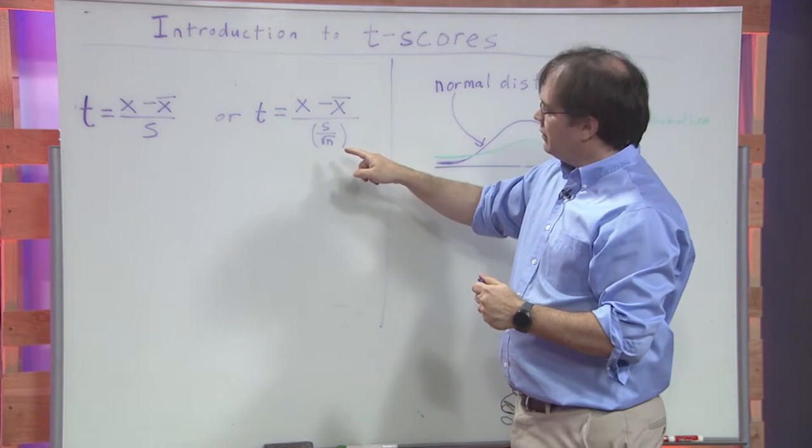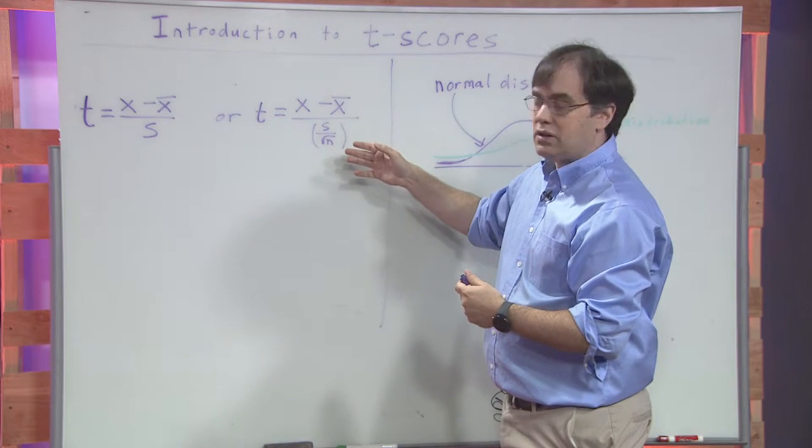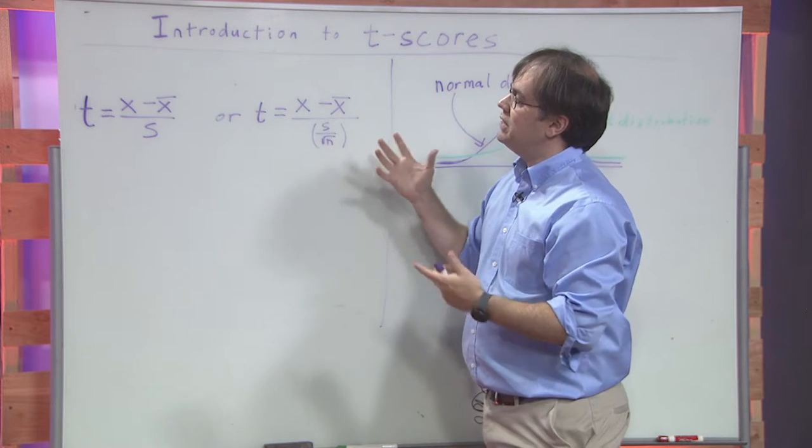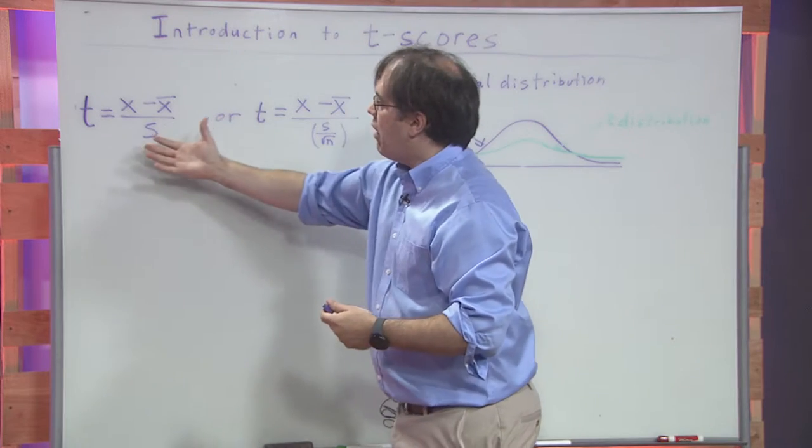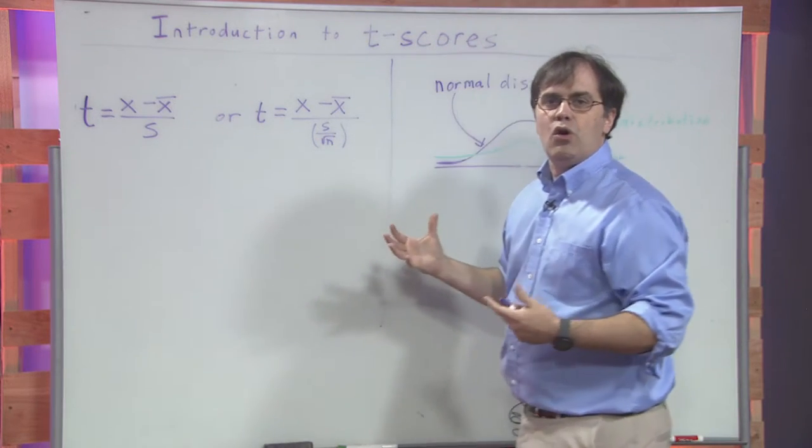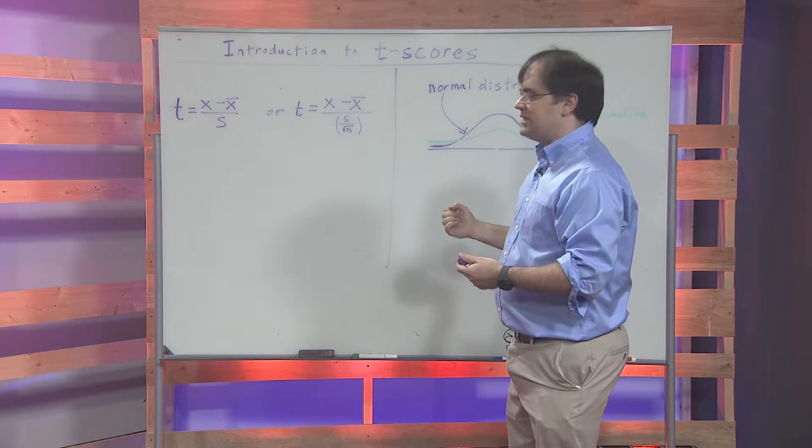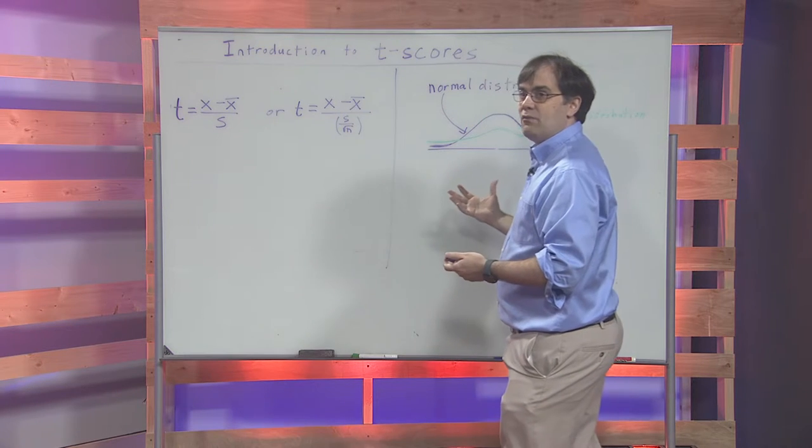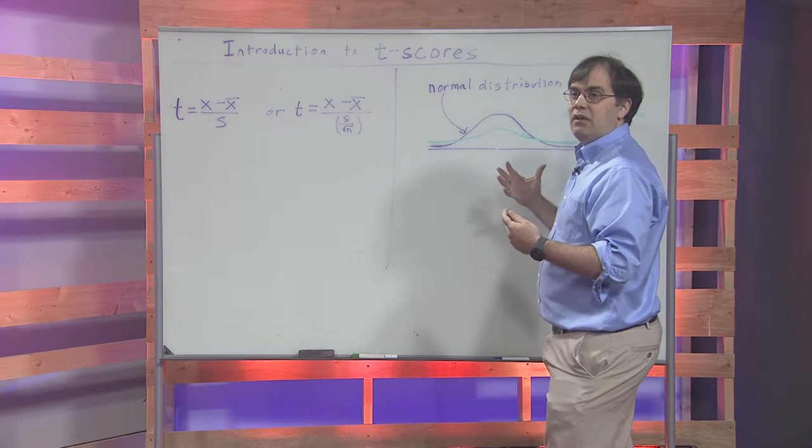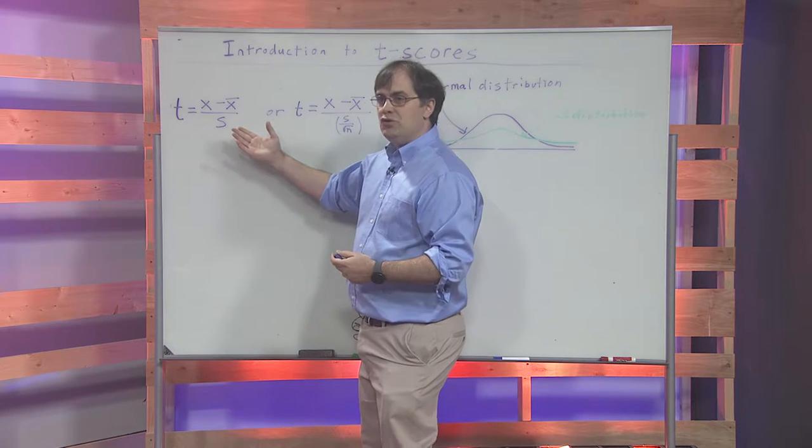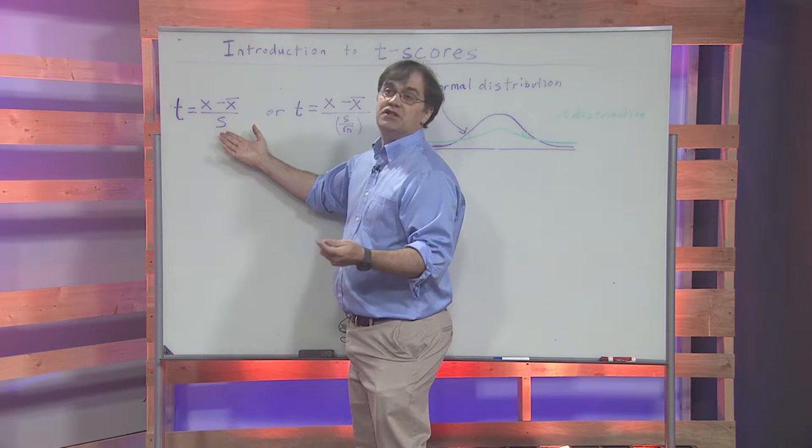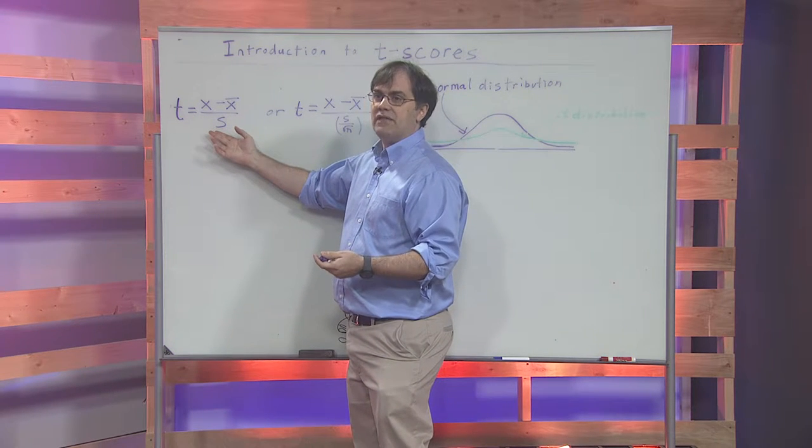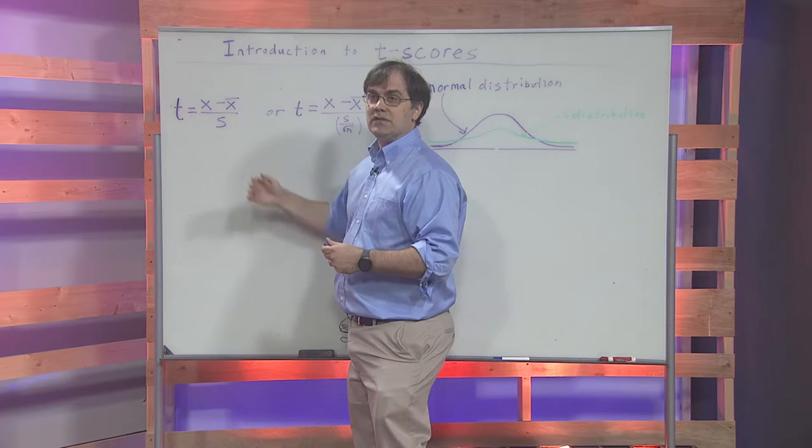This thing looks a whole lot like what we had talked about earlier with the standard deviation of a sampling distribution. These things are very useful when you don't know the population standard deviation. This is the formula that you will be using when you're dealing with confidence intervals and hypothesis testing when you do not know the population standard deviation. You always have some standard deviation, but the standard deviation that you'll have in this case is the sample standard deviation.